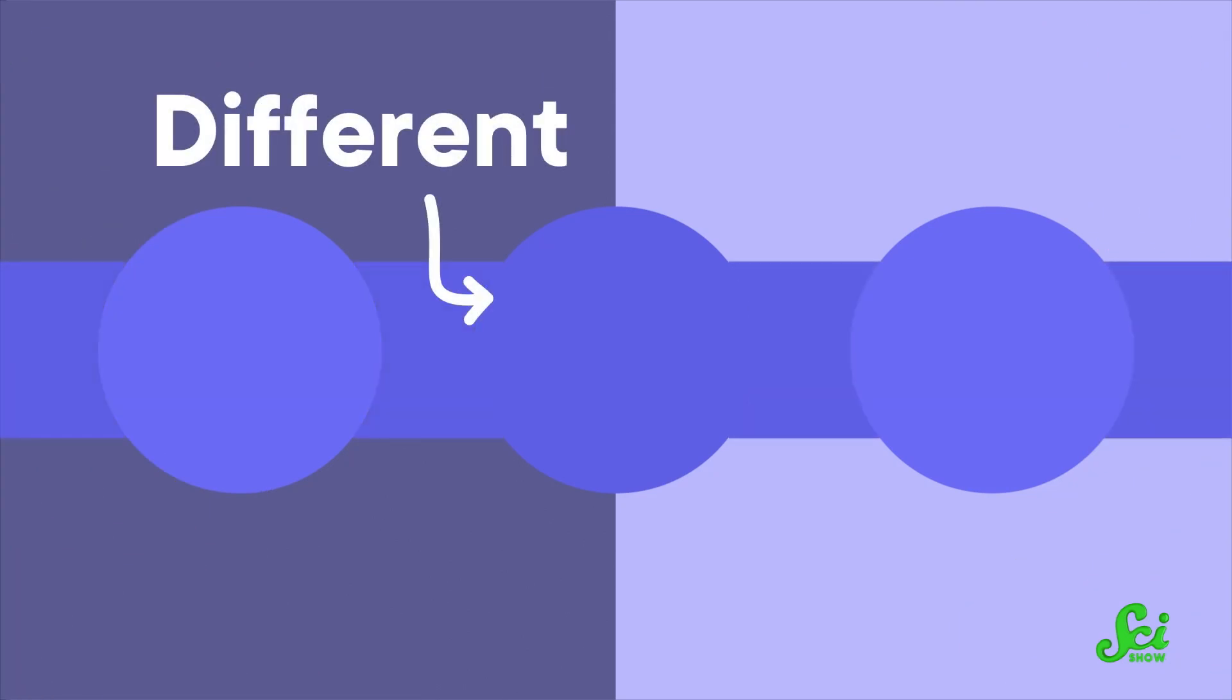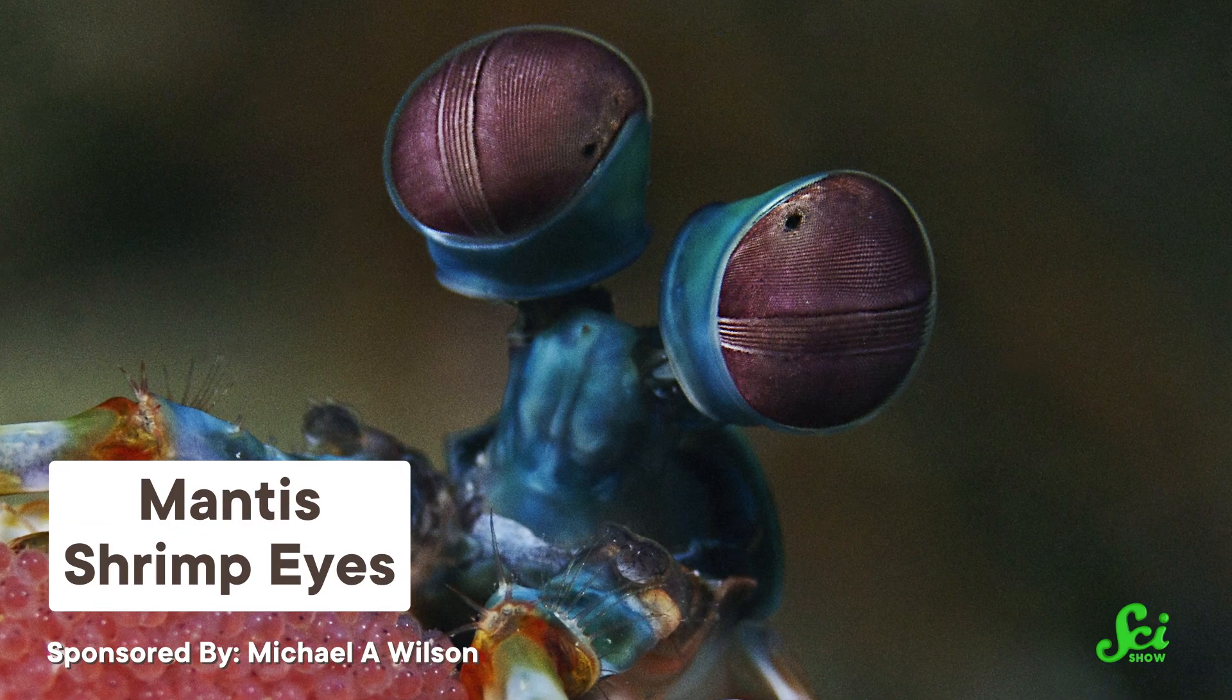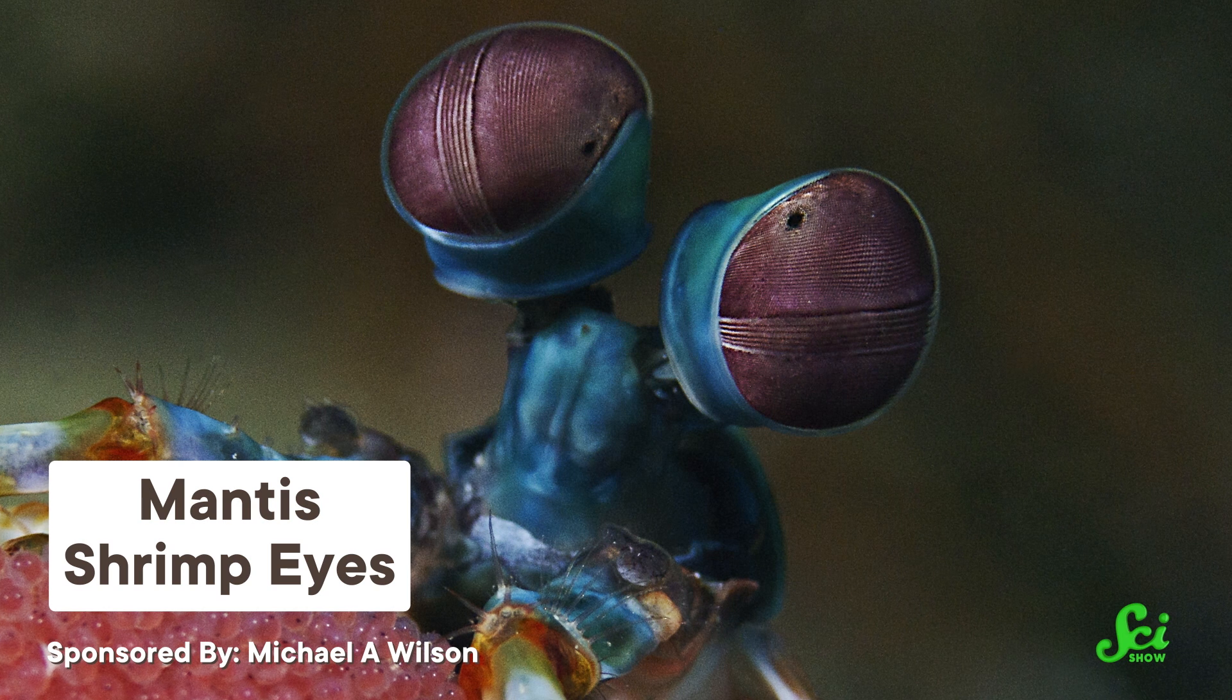So people with this condition, called tetrachromats, can see a whole range of colors and shades that are completely indistinguishable to most of us. It's less that they can see colors that are invisible to us, and more that they can tell the difference between colors that look exactly the same to most other people. Which means they're probably way better at telling their black socks apart from their navy ones. And while having four distinct receptor types is way above average for a human, tetrachromats have got nothing on mantis shrimp, which can have between 16 to 21 kinds of photoreceptors in their eyes. Just, you know, to put things in context.